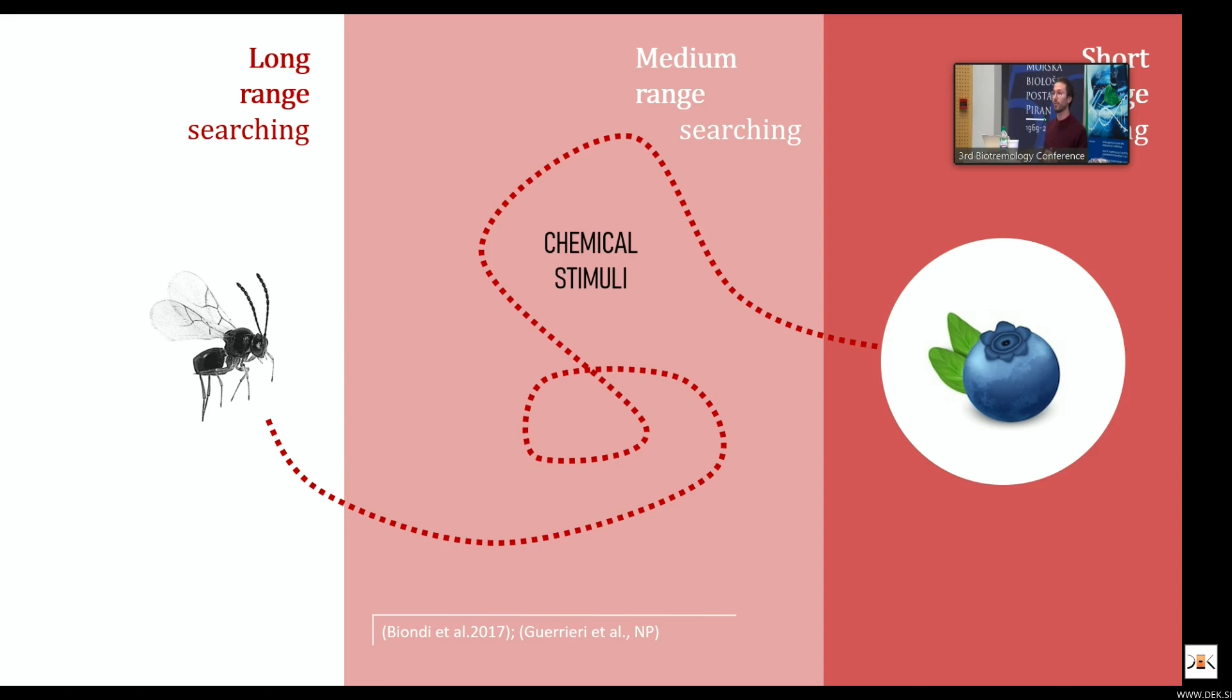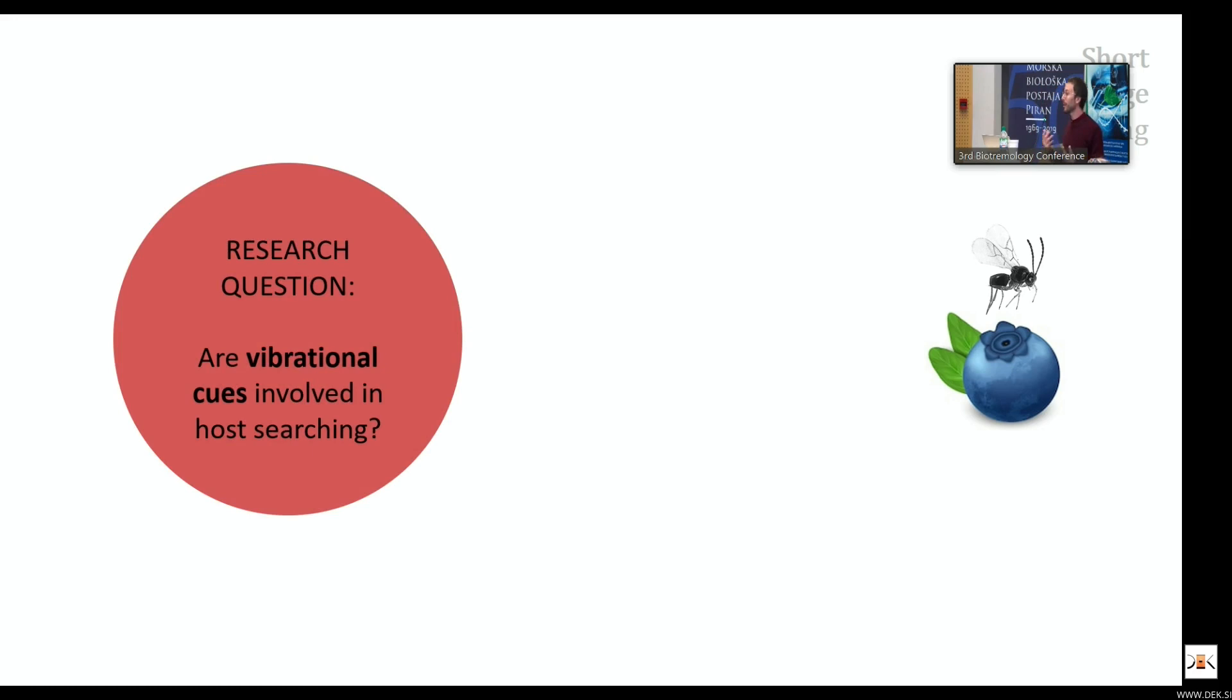But what actually happens in the short range in the micro habitat has only been mentioned in the past, that there's some vibrotaxis involved. Very little is known, especially for these kind of species and especially for vibrations that are actually occurring within a fresh fruit like a blueberry. So our first main question was: are vibrational cues involved in the host searching and host detection of these parasitoids towards the larvae?